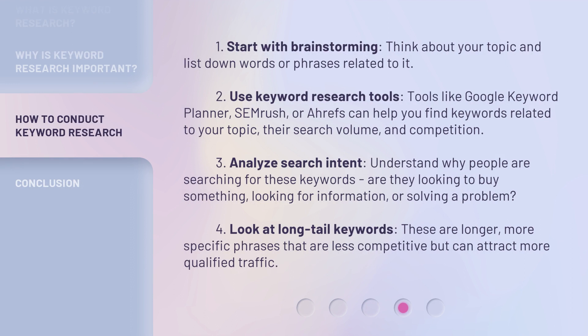Step 1: Start with brainstorming. Think about your topic and list down words or phrases related to it. Step 2: Use keyword research tools. Tools like Google Keyword Planner, SEMrush, or Ahrefs can help you find keywords related to your topic, their search volume, and competition.